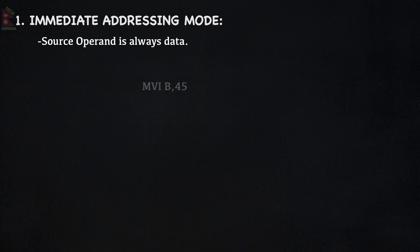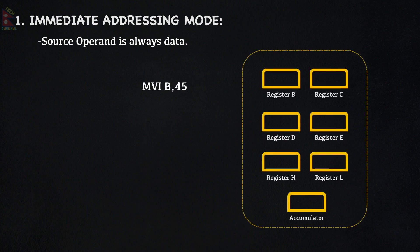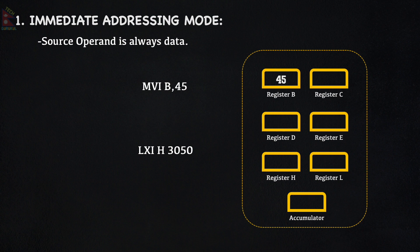For example, MVI B, 45. When we execute MVI B, 45, then 45 is immediately loaded into register B. Another example is LXI H, 3050 — when executed, the H-L register pair is loaded with the value 3050, with H getting 30 and L getting 50.